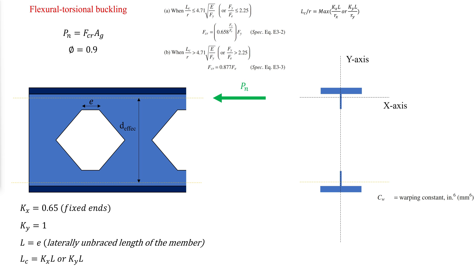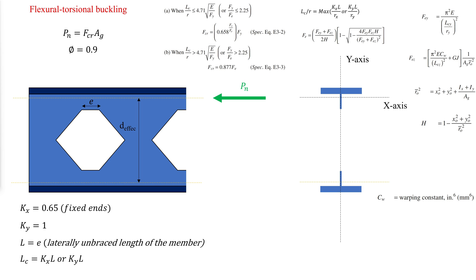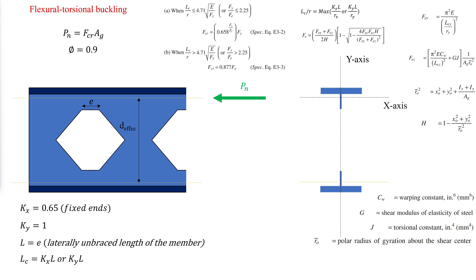Flexural torsional buckling uses the same equations as flexural buckling with the exception of the elastic stress, where Cw is the warping constant, which can be taken as one for T sections. G is the shear modulus of elastic steel, J is the torsional constant of the T section, and R0 is the polar radius of gyration about the shear center. X0 and Y0 are the coordinates of the shear center with respect to the centroid.